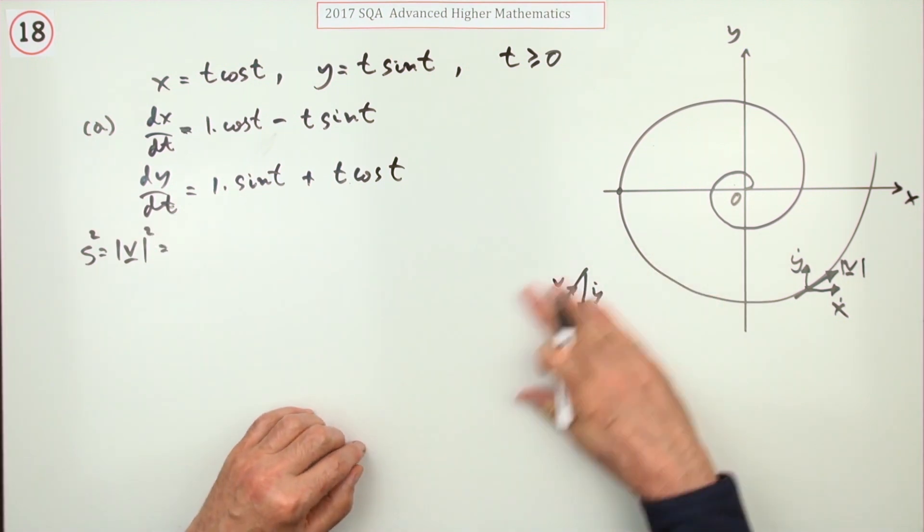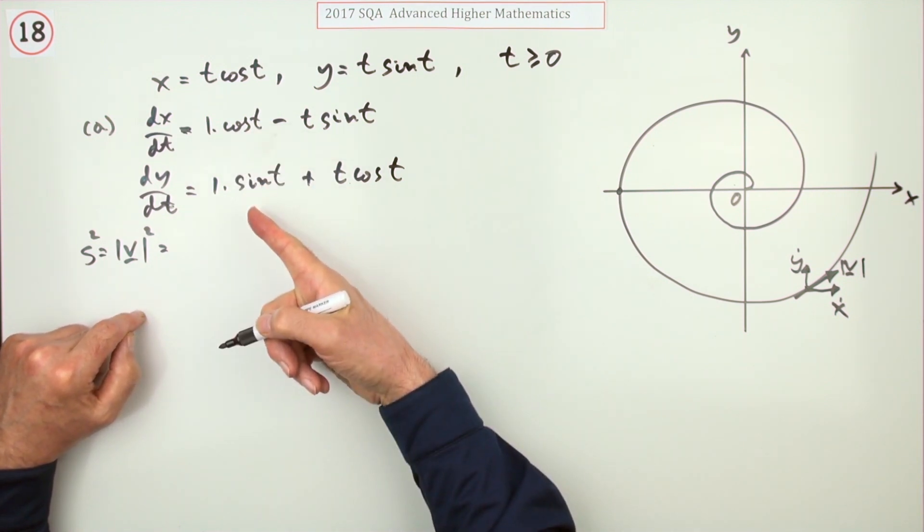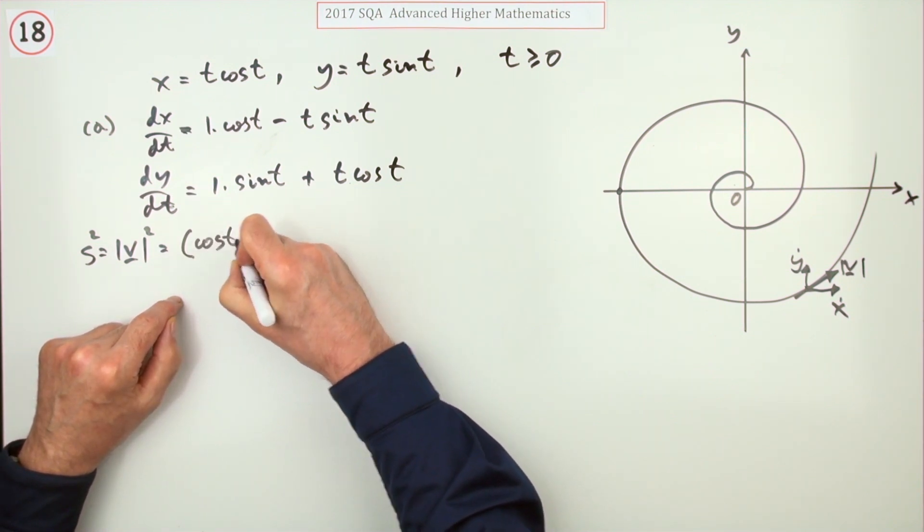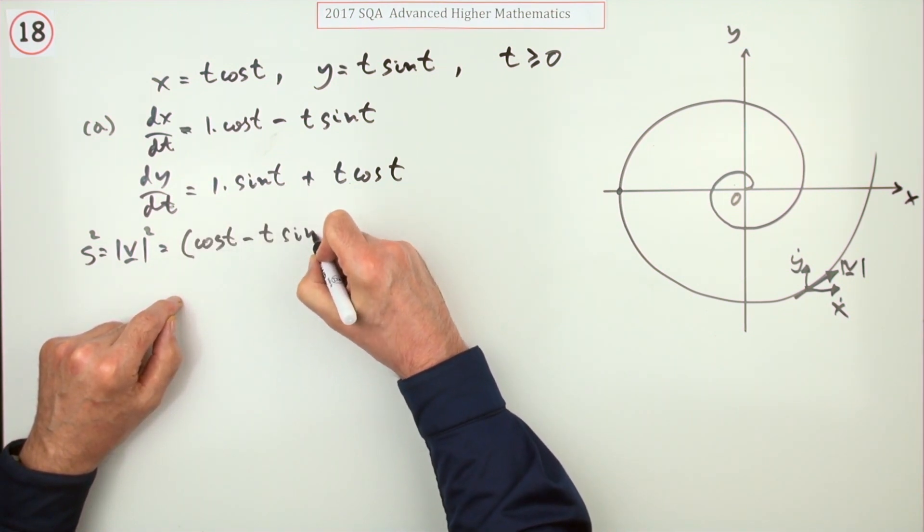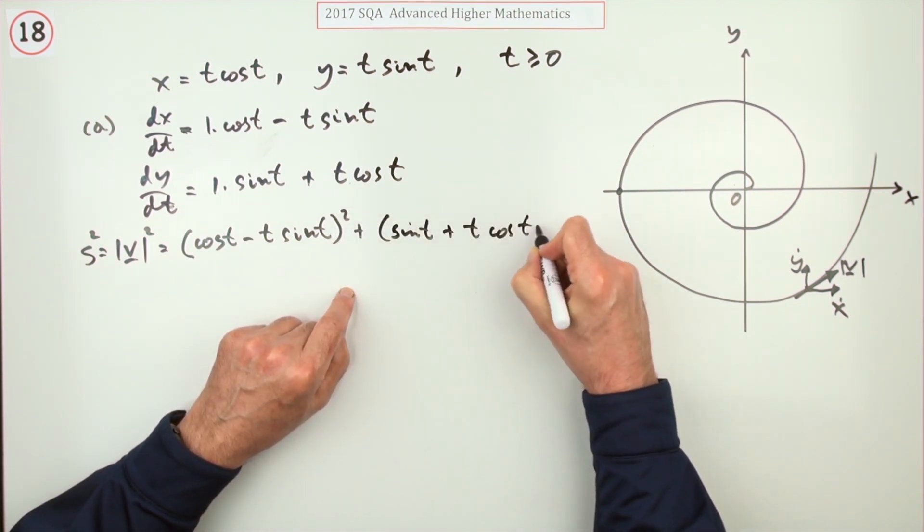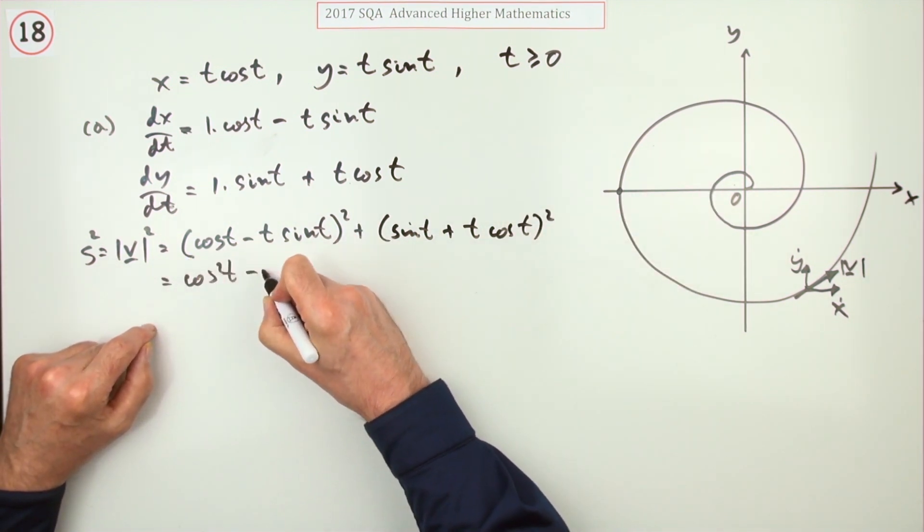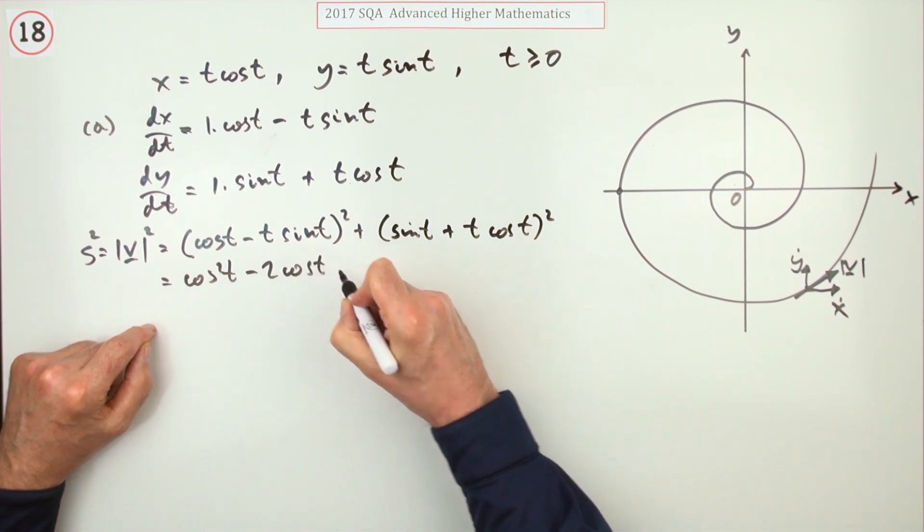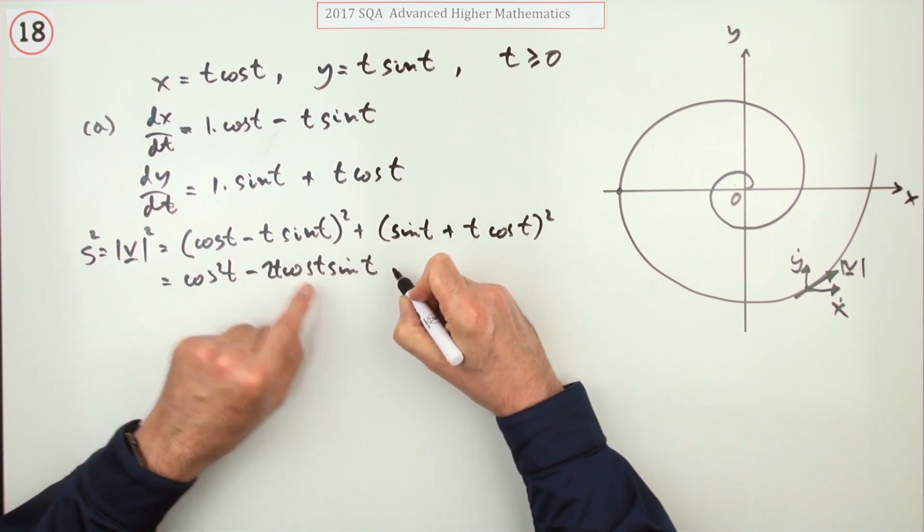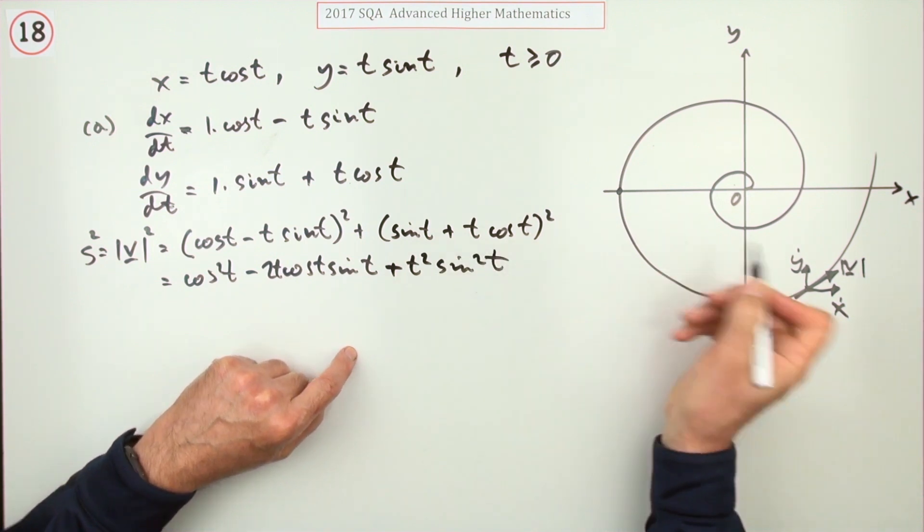That means I've got to square these two things in Pythagoras. I've got cos t minus t sine t to be squared, and I've got sine t plus t cos t to be squared. Square the first, twice the product—so that's cos t times t sine t. Square the last, so plus t squared sine squared t.